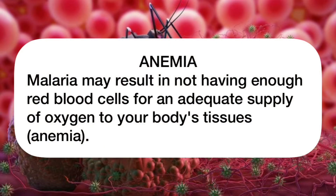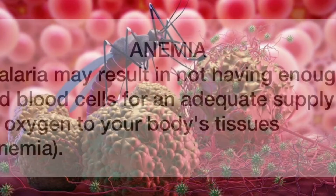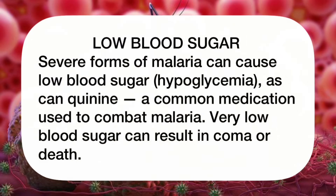Anemia: malaria may result in not having enough red blood cells for an adequate supply of oxygen to your body's tissues. Lastly, we have low blood sugar. Severe forms of malaria can cause low blood sugar, as can quinine, a common medication used to combat malaria. Very low blood sugar can result in coma or death.